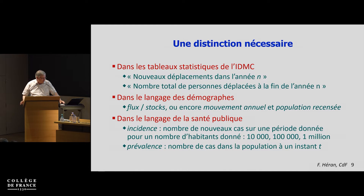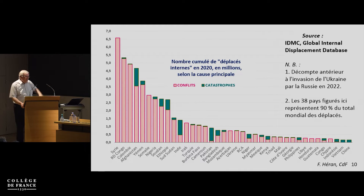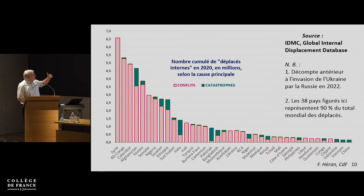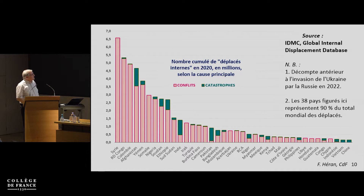Once you understand the way it is classified, what are the results? This is a graph of mine but directly taken from the data. The numbers are in millions. This is stock data — displaced persons due to conflicts and the other due to catastrophe. And you see that despite all the efforts made to identify forced displacement due to environmental events, it represents more or less one eighth of the total number of displacements.